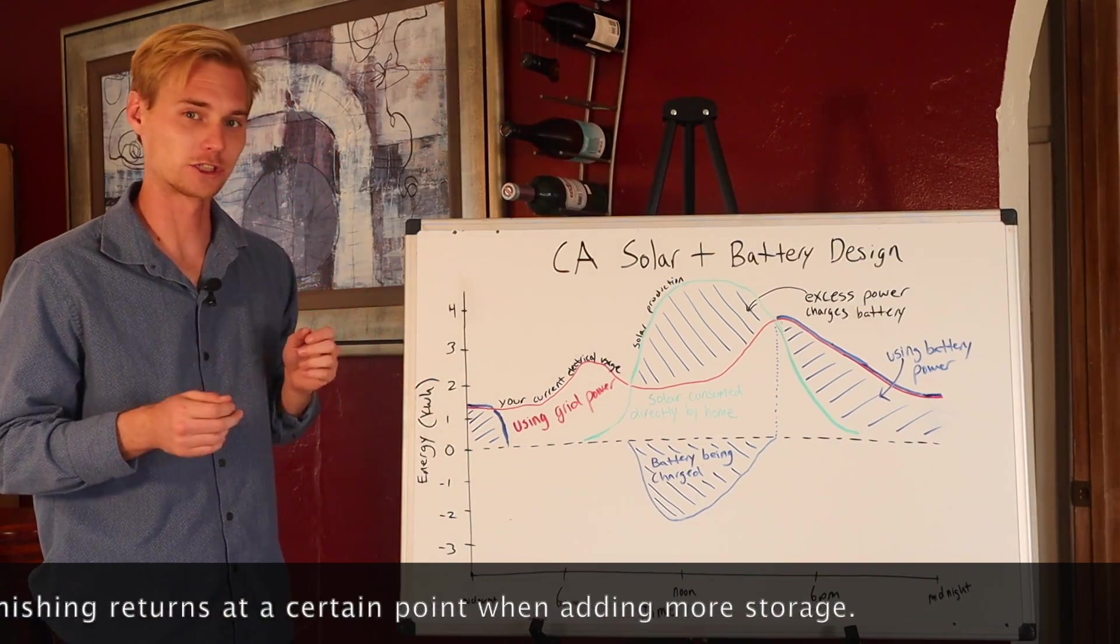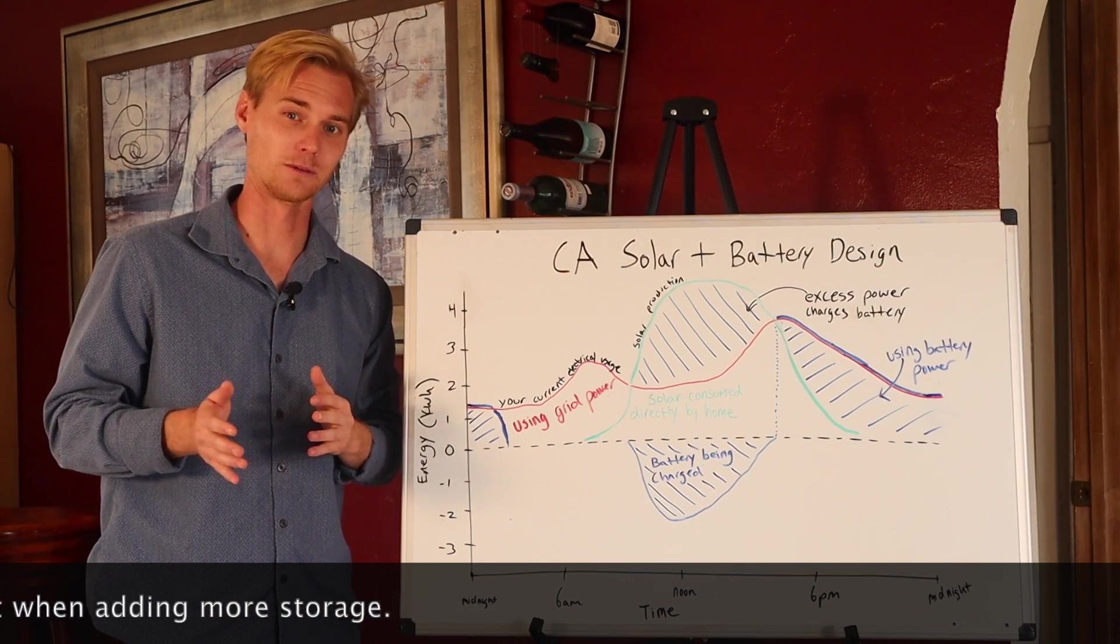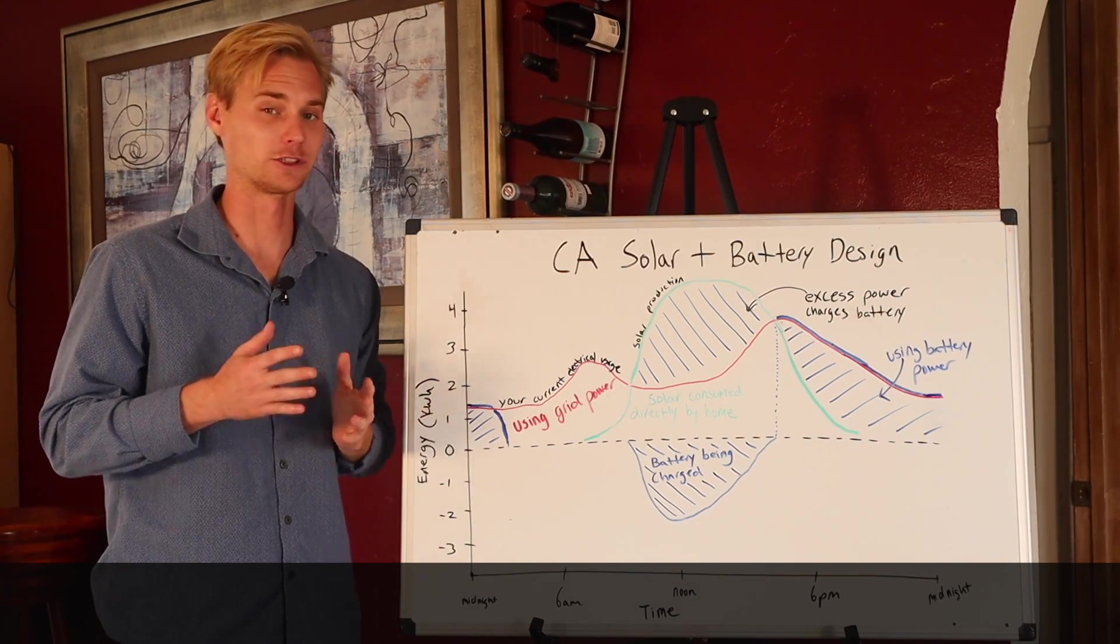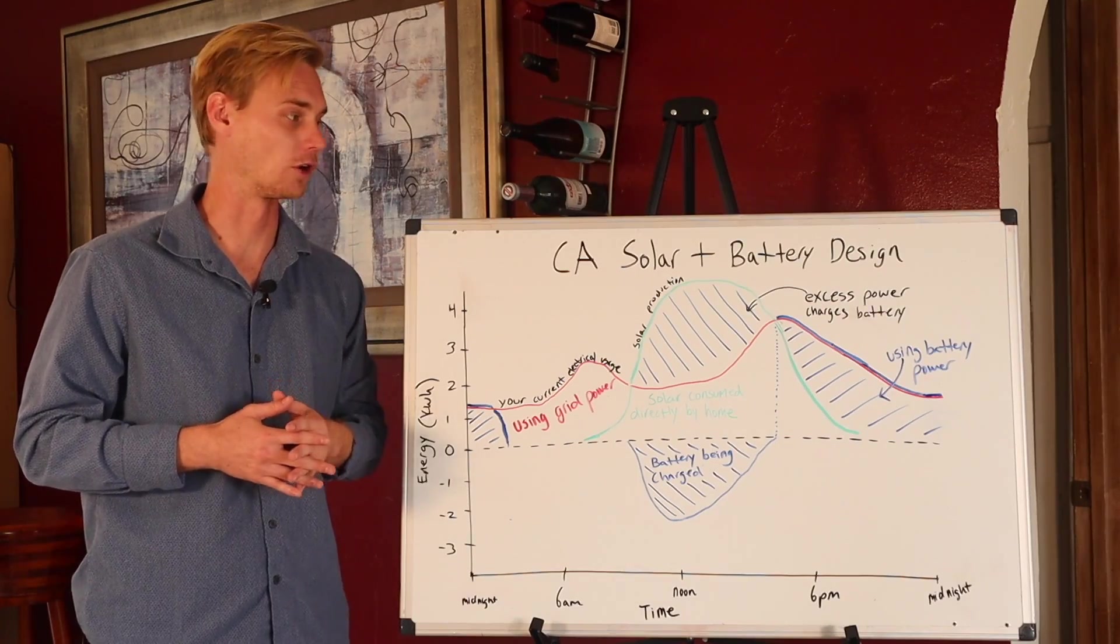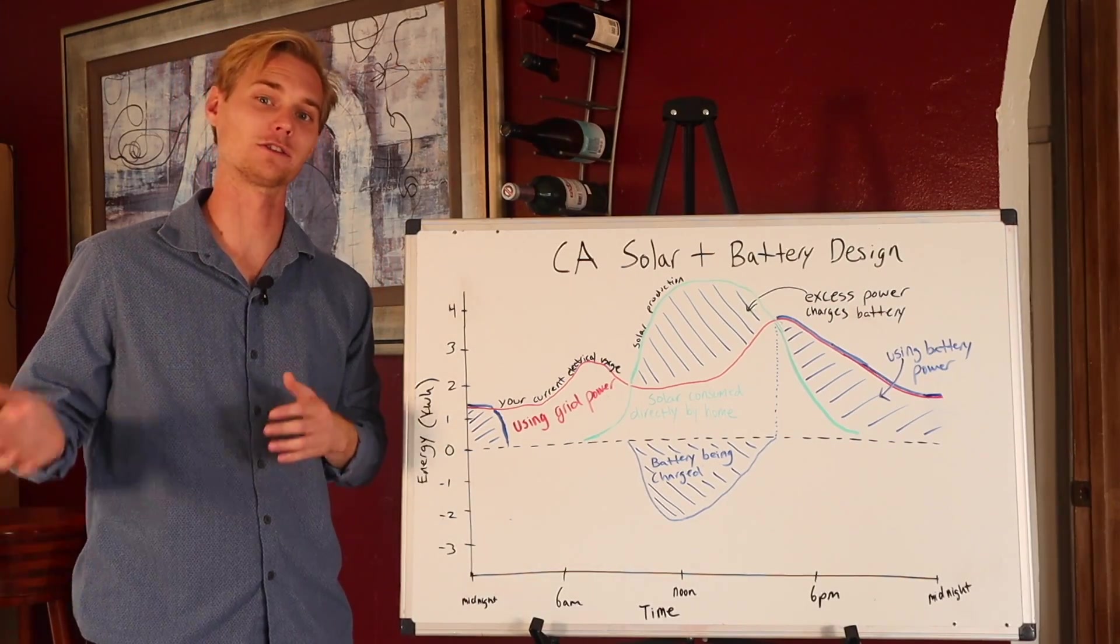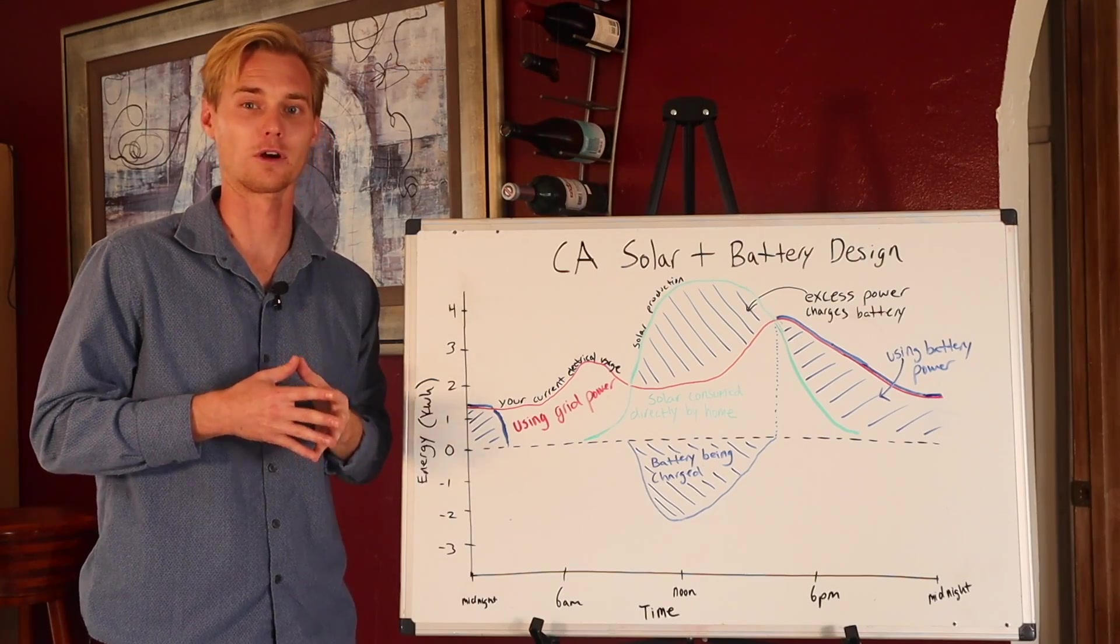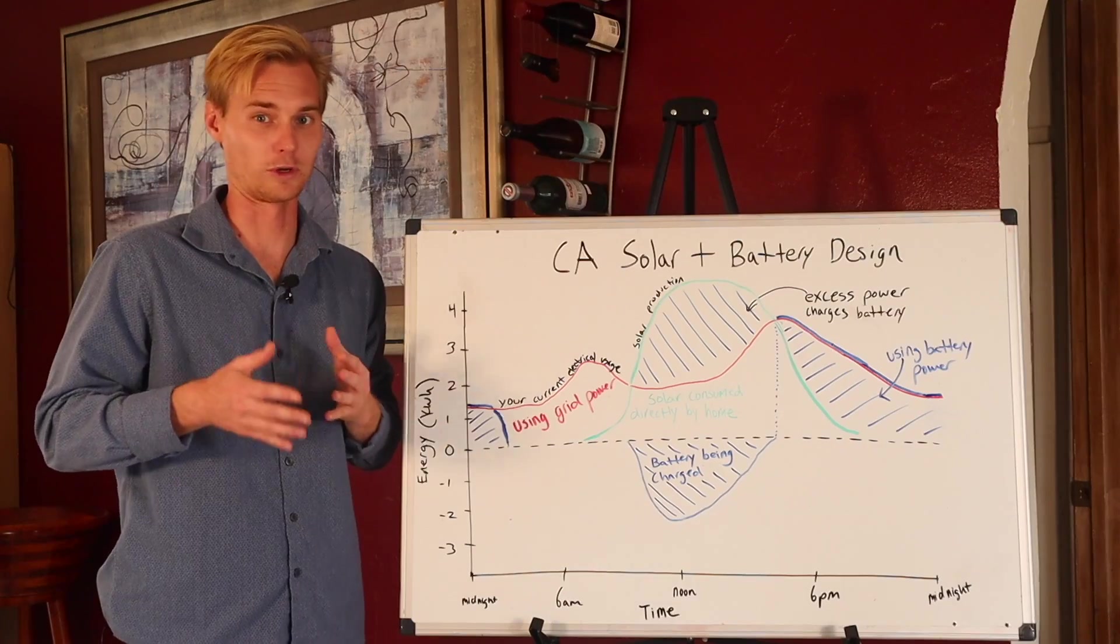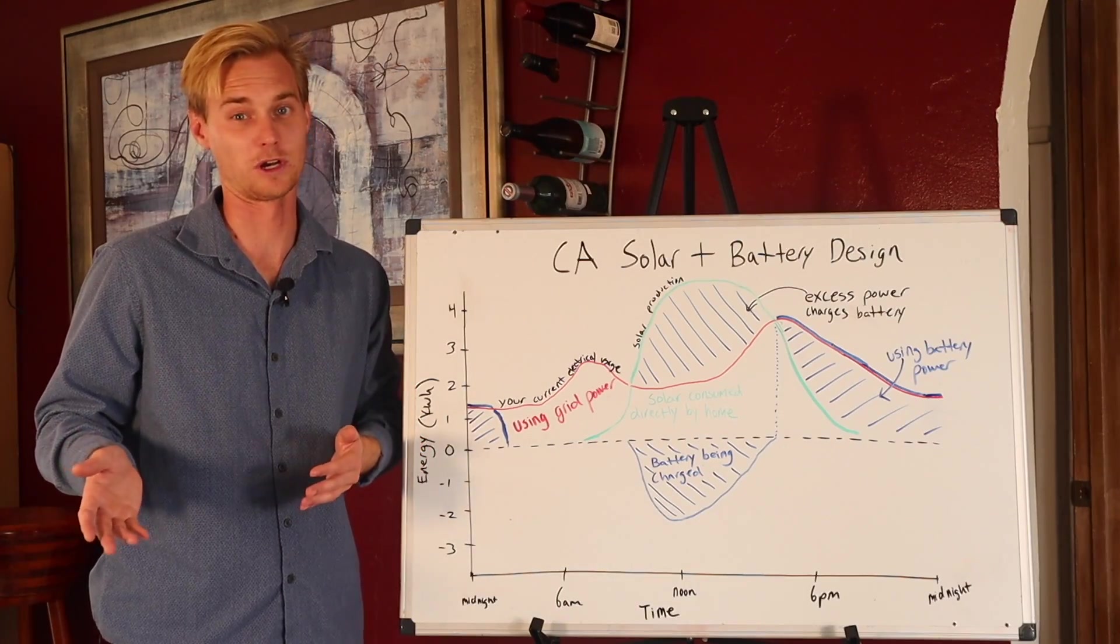In California, we're actually still modeling out these systems sometimes to see as low as around eight years, which is still better than the majority of the country. So even though California has not great net metering anymore, because the rates from the utility companies are some of the highest in the entire country, going solar still makes sense and saves you money.